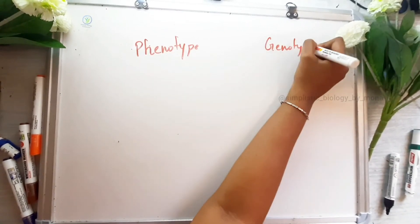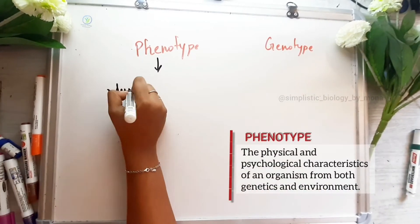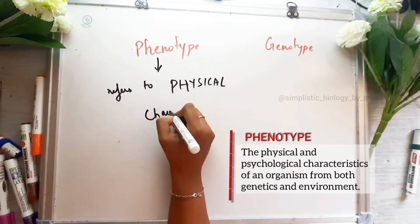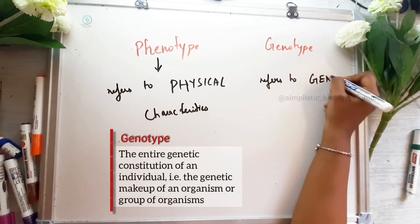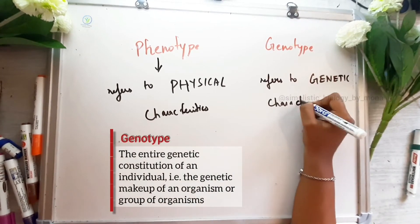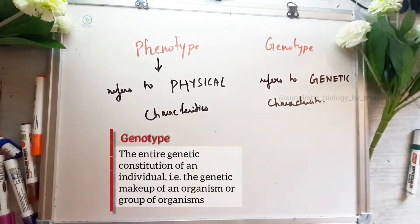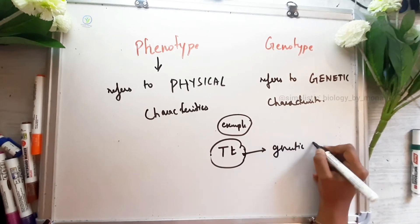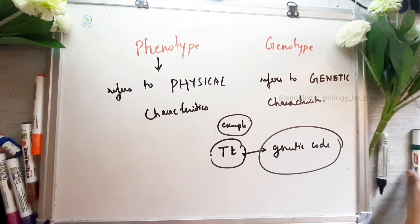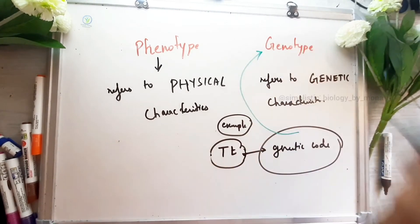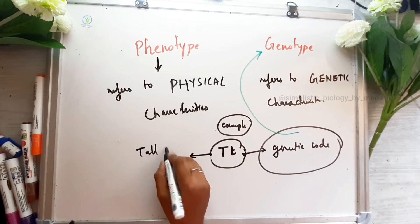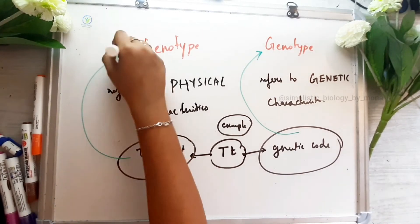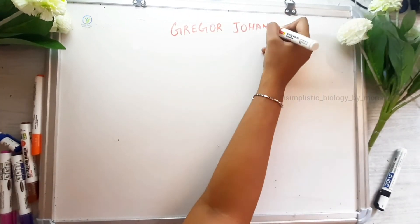Next, phenotype and genotype. Phenotype is the physical characteristics — what is shown. Genotype is the genetic characteristics. For example, a heterozygous gene combination is a genotype. Capital T for a tall plant: the characteristic shown — tall — is the phenotype.